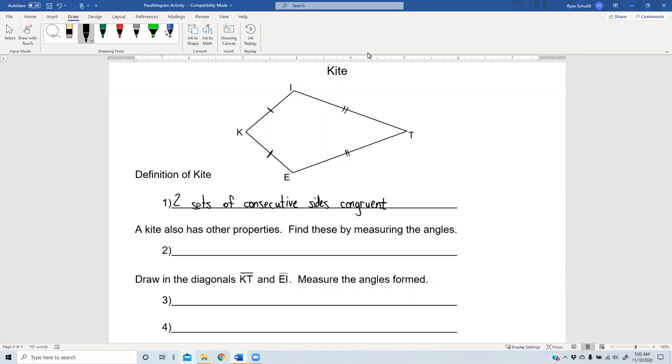It's also got some other properties. If we were to measure the angles here, are there any two angles that look like they could be the same? Yeah, angles I and E. If I measured that, I would get 118 degrees for I and E. And that will always be the case. It'll always be the case that these two angles that join the non-congruent consecutive sides will be congruent. So it also has one set of opposite angles congruent.